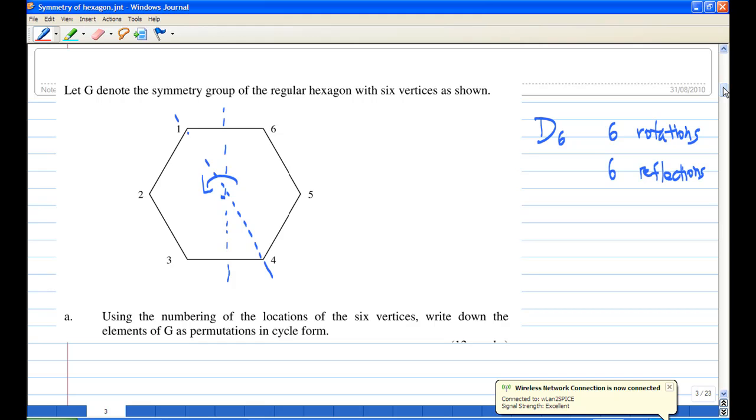There are six rotations and six reflections. The rotation is a rotation of 60 degrees about the center, which can be anti-clockwise or clockwise. I'm going to take anti-clockwise. Then there are reflections as well. Reflection along the line bisecting 1-6 and 3-4, for example, is one of the reflections. Reflection in the diagonal joining 1-4 is also another symmetry.